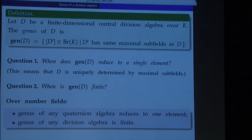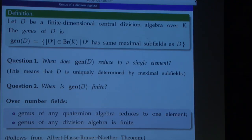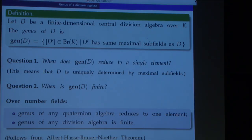These facts are consequences of the description of the Brauer group of number fields — both statements follow from the famous Albert-Hasse-Brauer-Noether theorem, which describes the Brauer class over a number field in terms of local invariants.